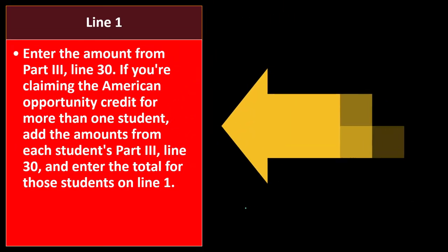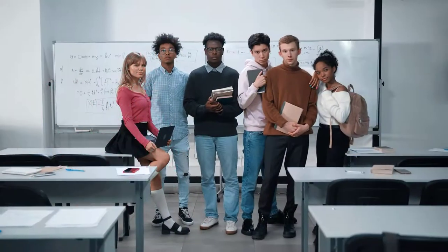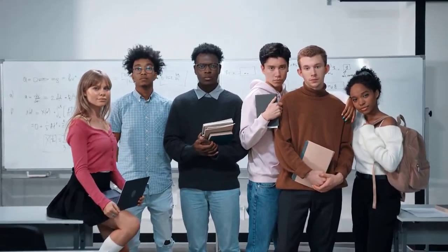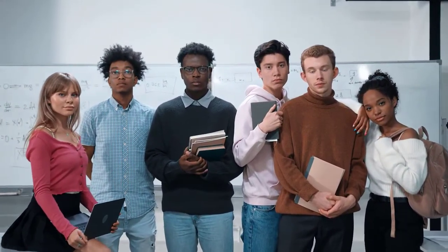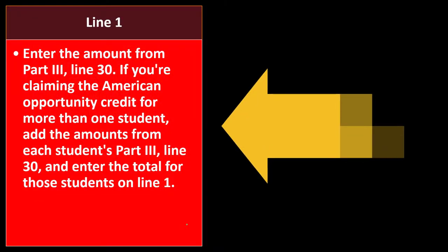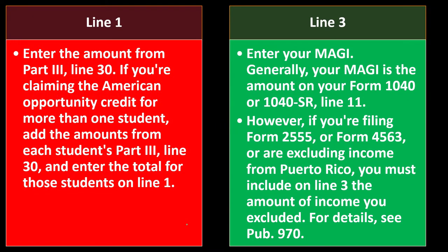If you're claiming the American Opportunity Credit for more than one student, add the amounts from each student's part 3, line 30. Remember, we can have multiple students for the American Opportunity Credit, whereas for the Lifetime Learning Credit, you get the maximum amount per return — not per student. Enter the total for all students on line 1.